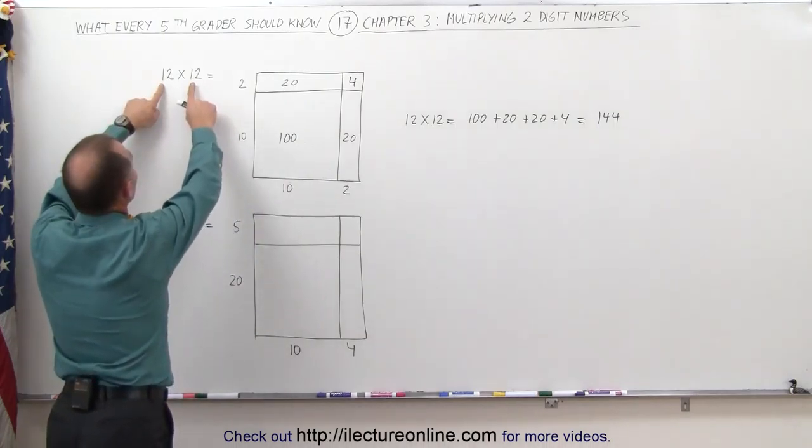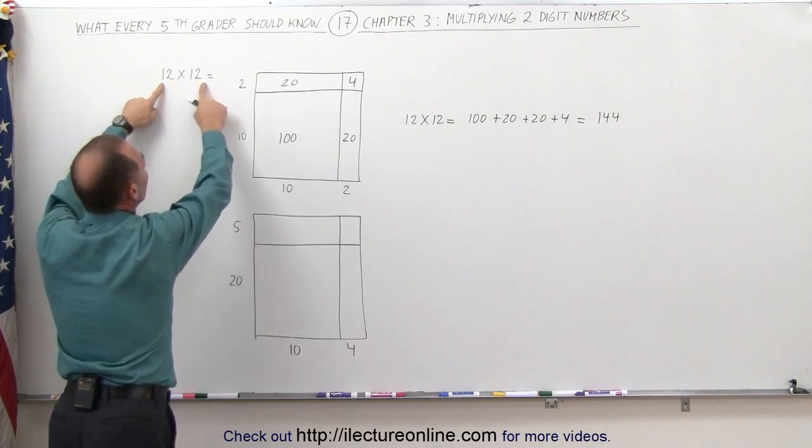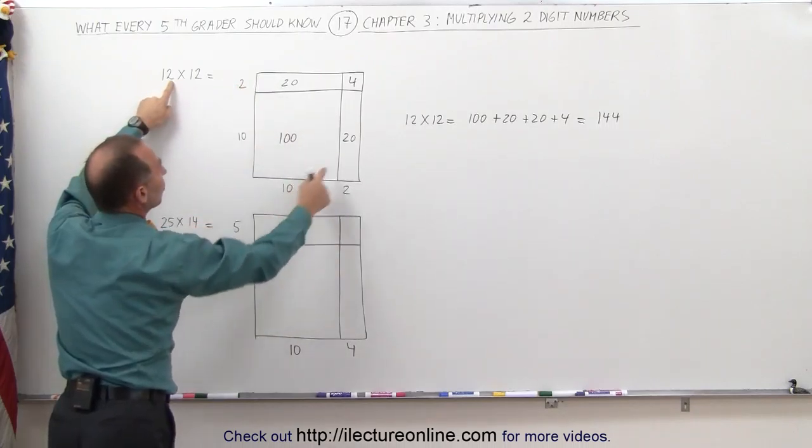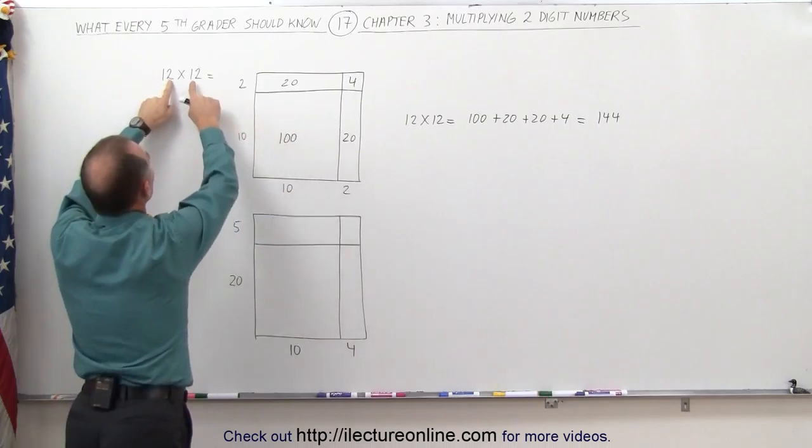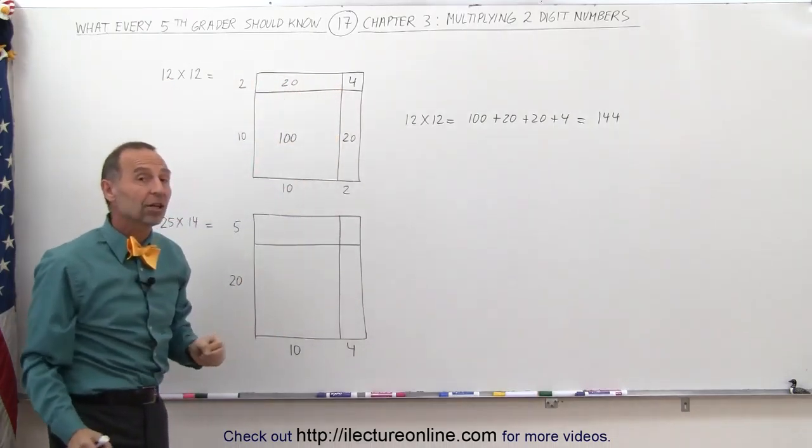It's multiplying 10 times 10, which is 100, this 10 times this 2, which gives us 20, this 10 by this 2, which gives us the other 20, and then 2 times 2, which gives us the 4, and this graphically represents what that multiplication is.